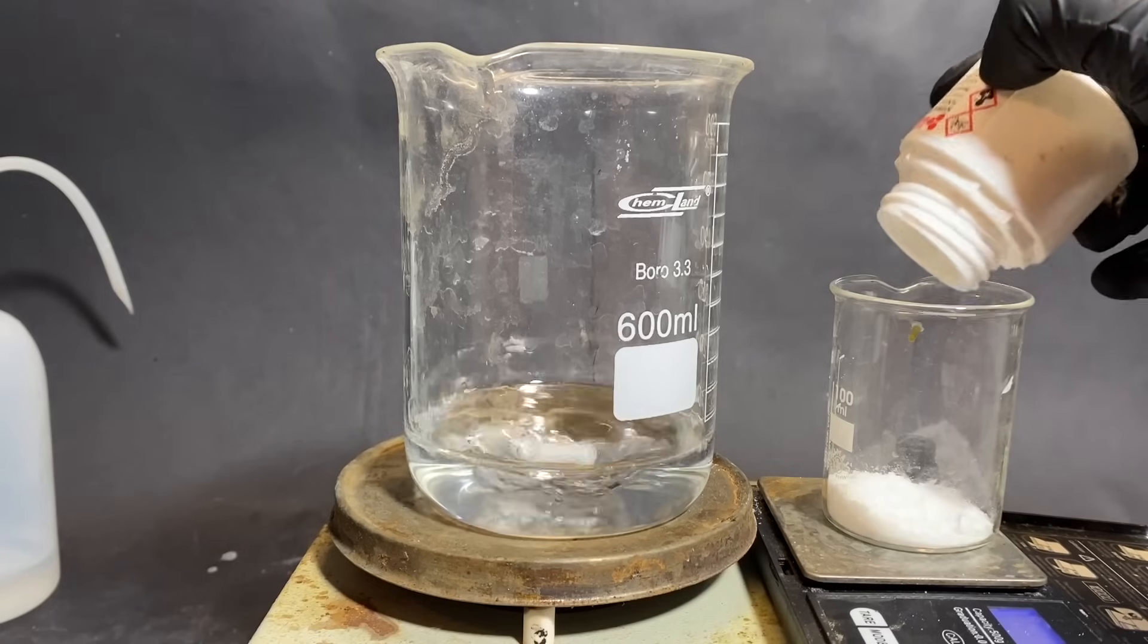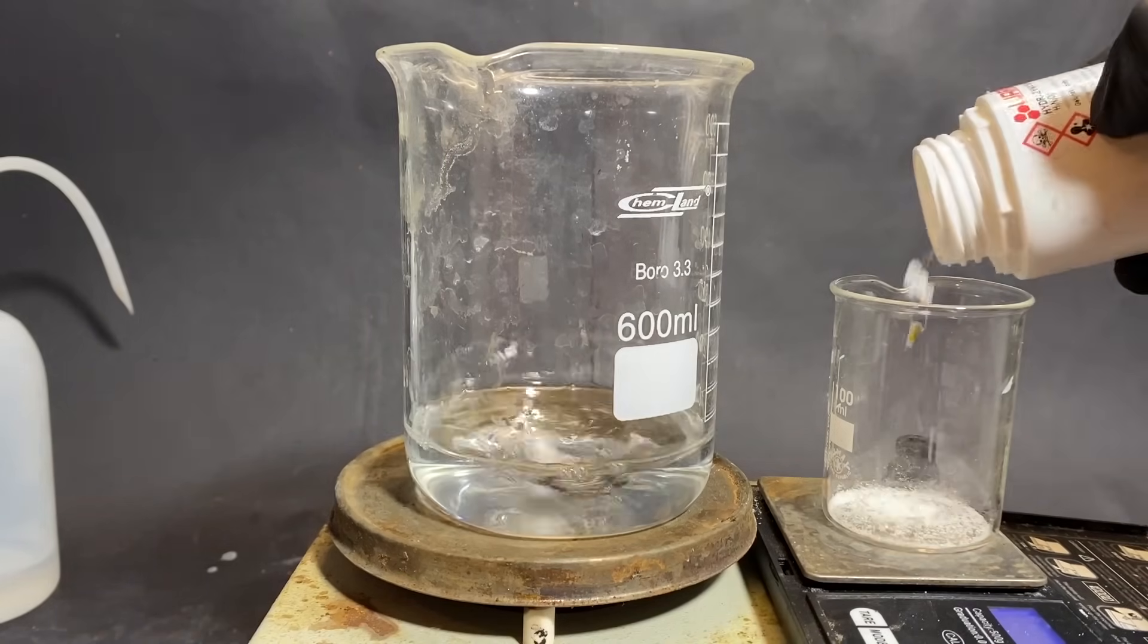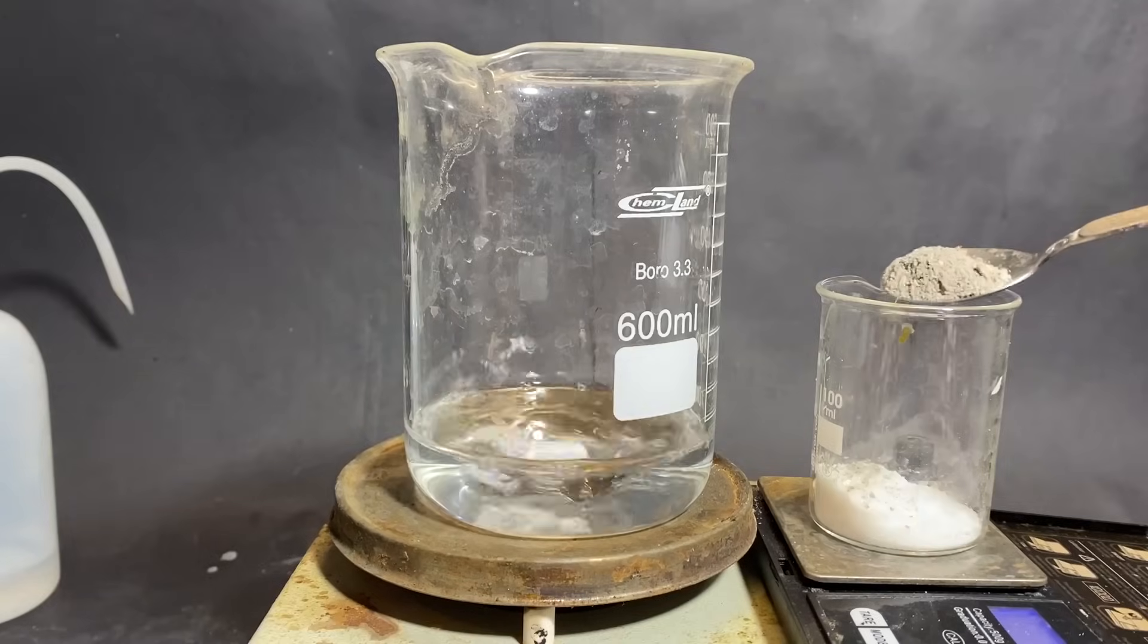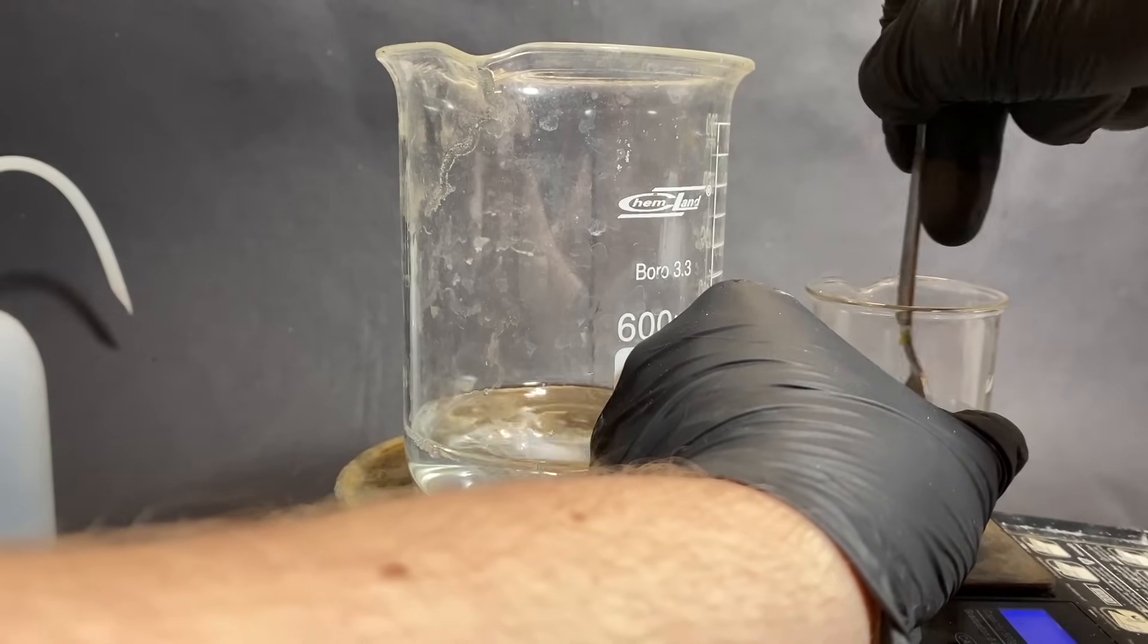On the side, I weighed out some hydrazine sulfate, which is the sulfate salt of hydrazine, which I bought online, and some of the calcium cyanamide. Then I roughly stirred the two reagents.